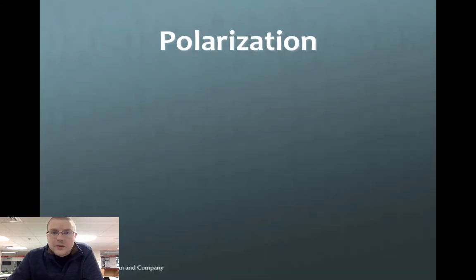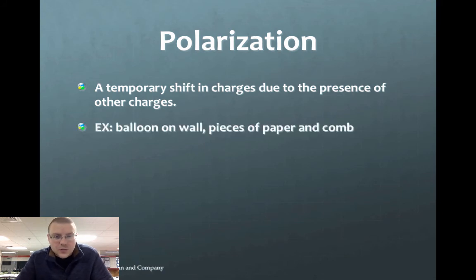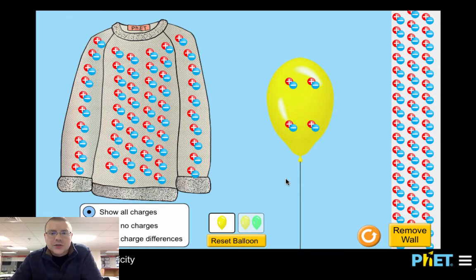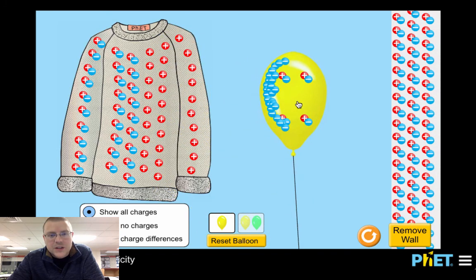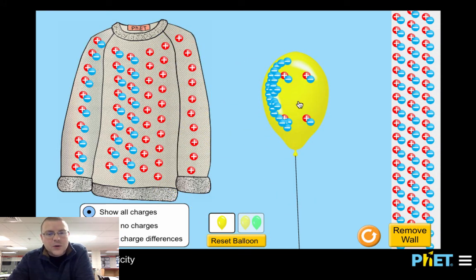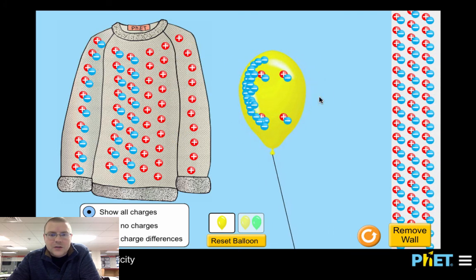One temporary method of charging is known as polarization. So polarization is when charges shift due to the presence of other charges, like sticking the balloon on the wall. So this scenario is showing us here is that I've got a neutral balloon and a neutral sweater. If I charge the balloon through friction, I stole electrons off of the sweater. So the sweater is now positively charged and the balloon is negatively charged. Releasing them, you can see electrostatic attraction of opposite charges.